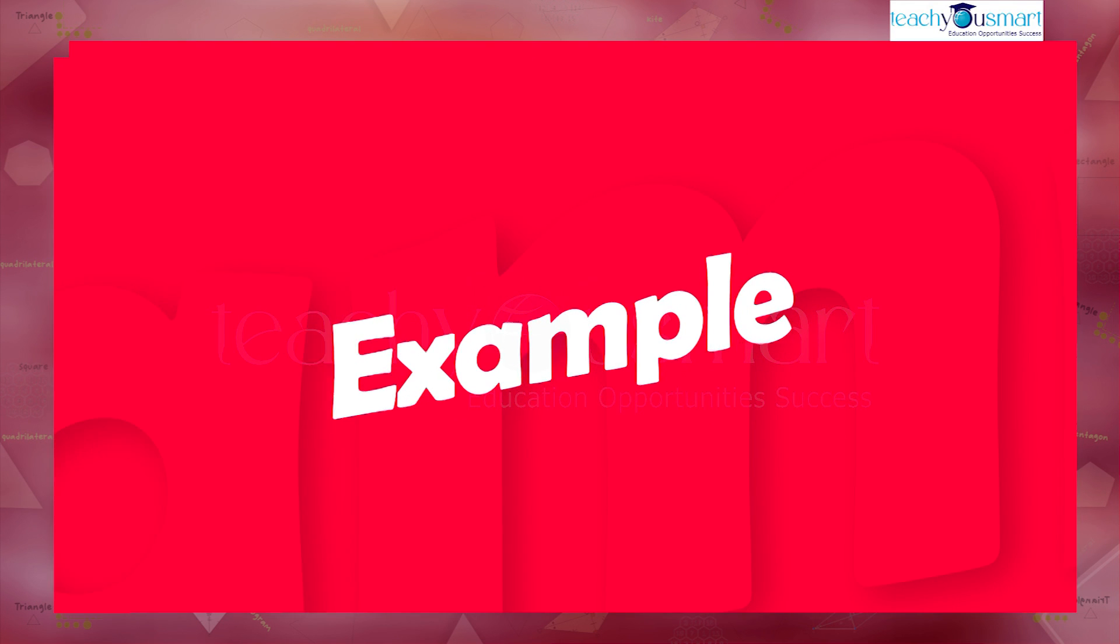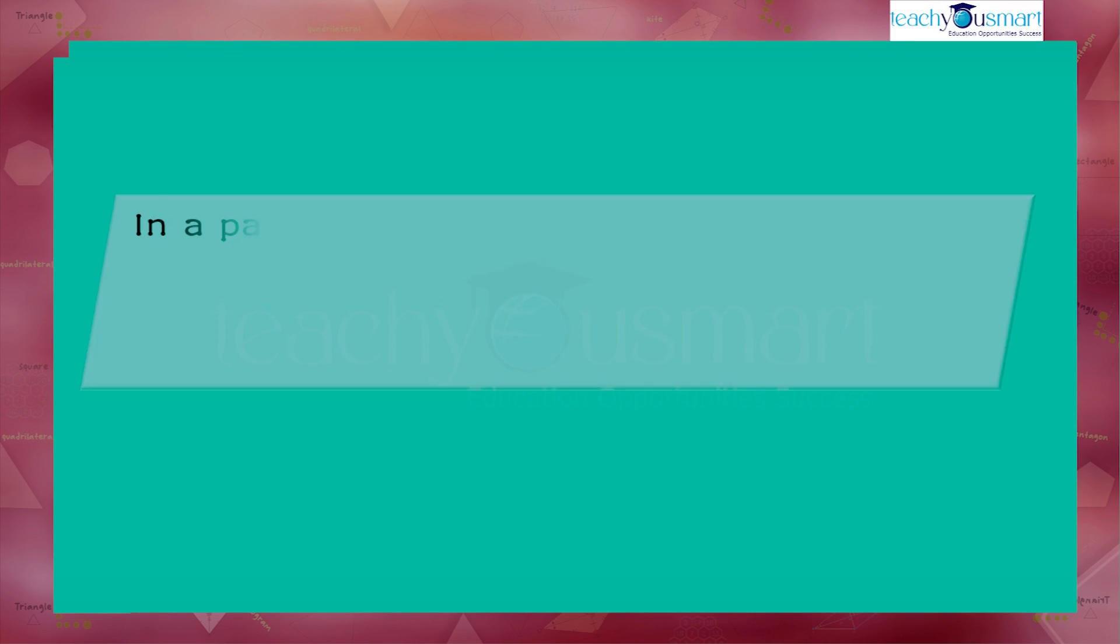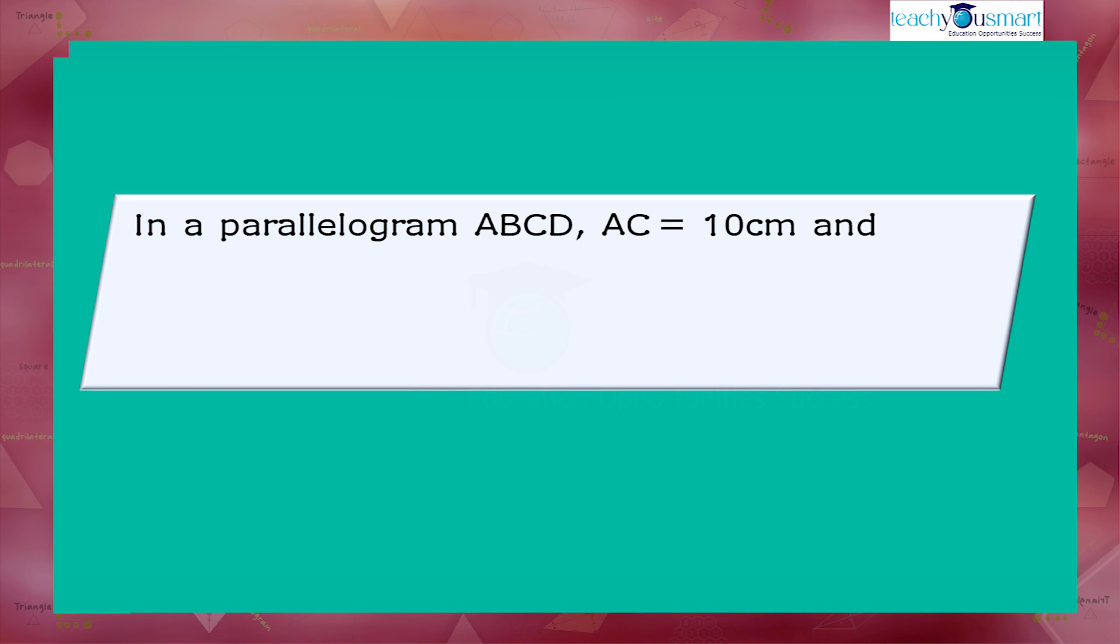Let's move to another example. In a parallelogram ABCD, AC equals 10 cm and BD equals 8 cm. Also AO equals x plus y cm and BO equals 2y cm. Find the value of x and y.